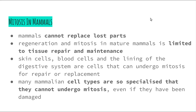Lastly, we need to look at mitosis in mammals. Unlike some other animals, mammals cannot replace lost parts — if we cut off an arm, we don't have the ability to grow it back. Regeneration and mitosis in mature mammals, such as adult humans, is limited to tissue repair and maintenance. Once we reach the end of puberty and our maximum height, we don't really have mitosis taking place for growth anymore.